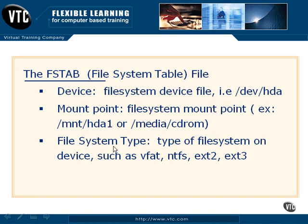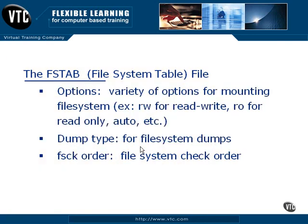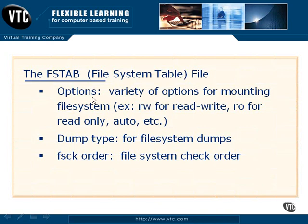If there are available file systems, those file systems will be listed in the file system type column. In addition, we have an options column that allows us to choose various read-write, read-only, or auto options depending on the circumstance under which the file system is loaded. There are also columns for the dump type in case of file system dumps, and the file system check order.